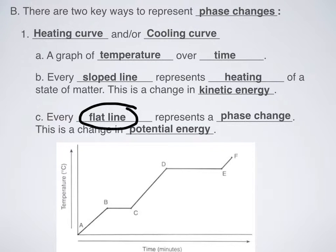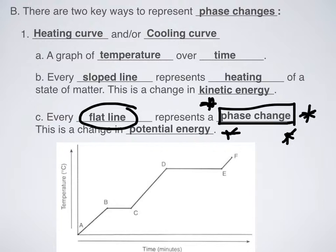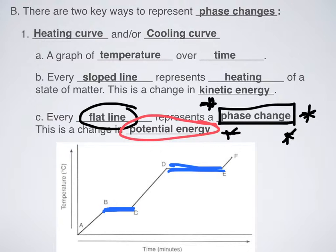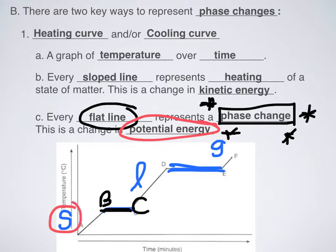Anytime there is a flatline or plateau, that represents a phase change — going from solid to liquid, liquid to gas, or solid to gas. Those are changes in potential energy. Every time I see a flatline, I am changing from one state of matter to another. If I know what the substance is, I can infer what state of matter I started with and what I'm going to end up with. For water, going from B to C I would be melting — going from a solid to a liquid — so that is the melting point of this substance.